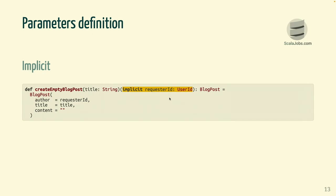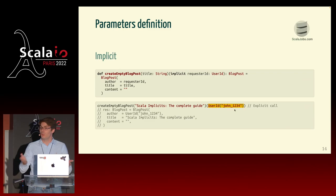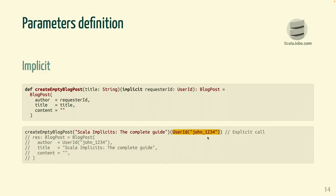Before going into the why, let me discuss how implicit parameters work. When you have a function with implicit parameters, you can actually pass the parameter explicitly — you can say create empty blog post, the title, and pass the user ID. It works, but it's not standard or idiomatic Scala. Normally, when you have an implicit parameter, you're not supposed to pass it manually. Generally, you let the compiler pass the parameter for you. In a sense, it's like dependency injection.